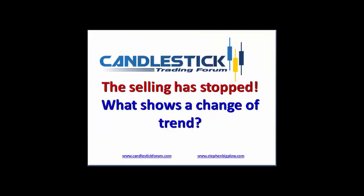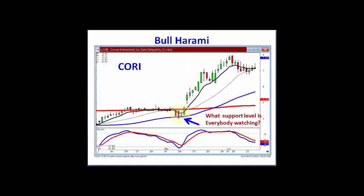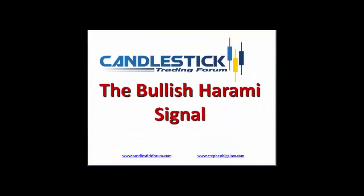Very simply stated, when the signal tells you the selling has stopped, what shows you the change of a trend is the bullish confirmation the next day that the bulls have taken control. You get added probabilities when the signal occurs at high probability areas like a major support level. Utilizing the information built into a bullish Harami improves the probabilities of getting out of short positions at the appropriate time and buying long positions at the exact right time.